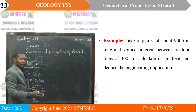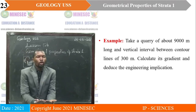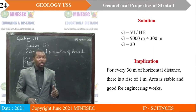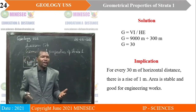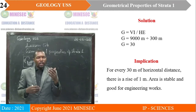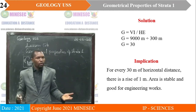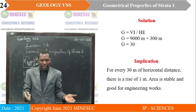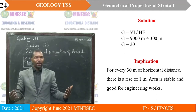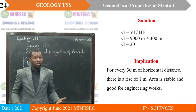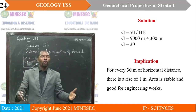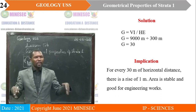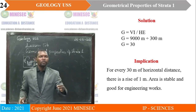The interpretation is: for every 30 meters covered horizontally, the terrain goes up by 1 meter in height. The engineering implication is that this area is good for construction works because it is stable. If you can move 30 meters horizontally and only rise 1 meter, that area does not even require heavy machinery to level — it is a very comfortable area for construction works.